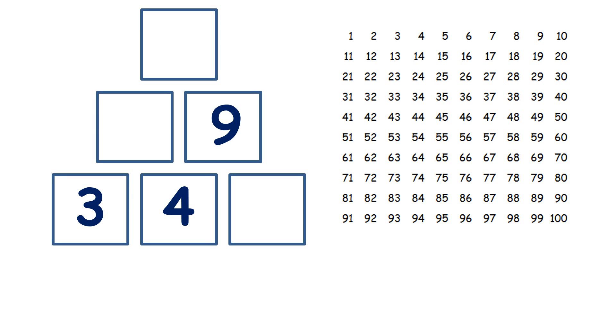So here we have an addition pyramid. In addition pyramids, two squares next to each other are added to make the square above them.